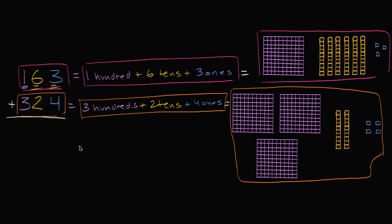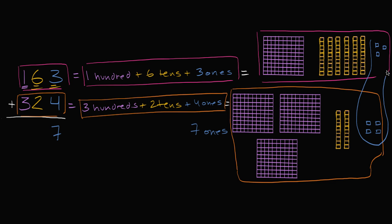So now let's add them together. Let's first look at the ones place. The ones place: you're going to have three ones plus four ones — that's going to be seven ones. Three ones plus four ones is seven ones. A seven in the ones place is seven ones. And we see that right over here: three ones plus four ones, that's seven ones.